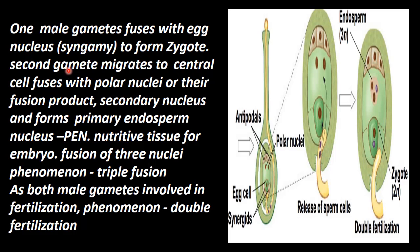The second male gamete migrates to the central cell — moving through the central area — and fuses with the polar nuclei in the central cell.